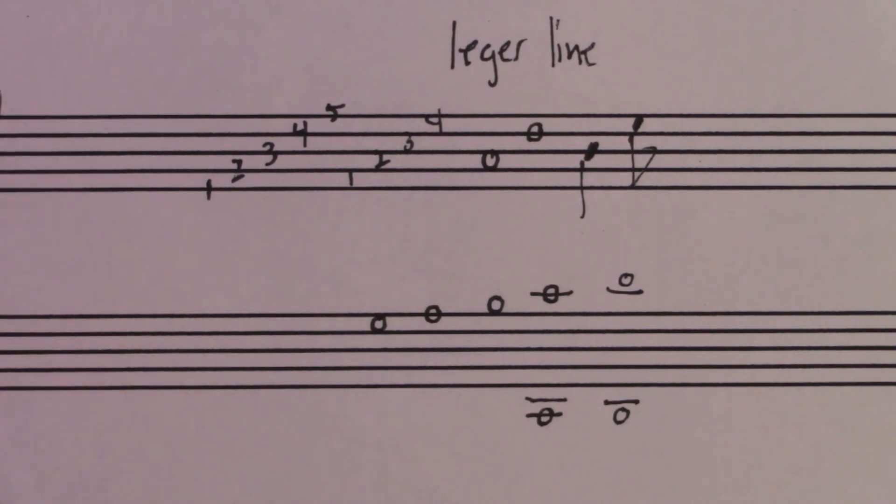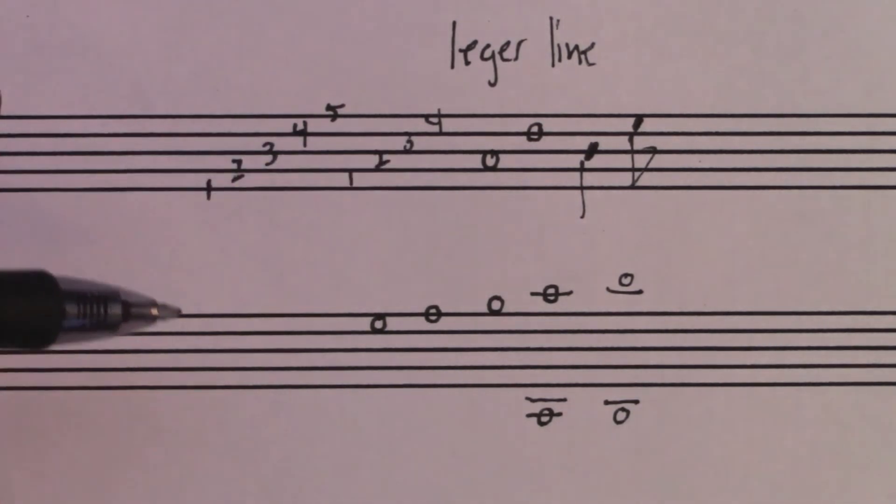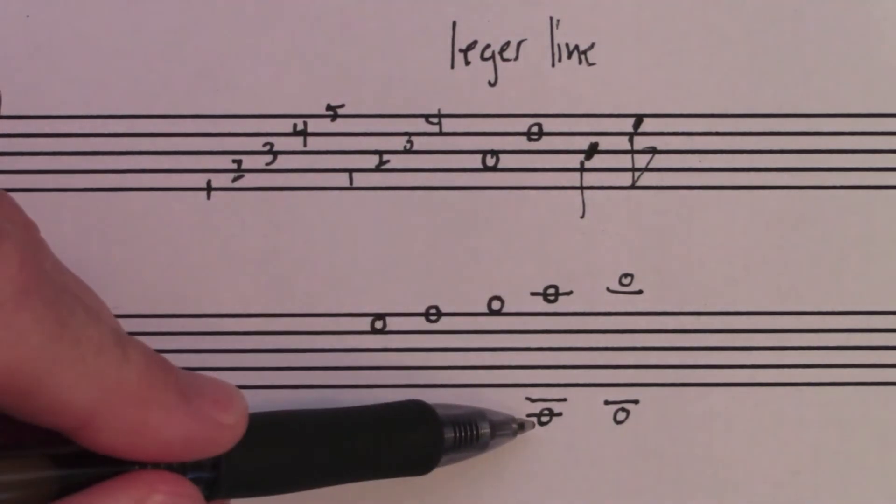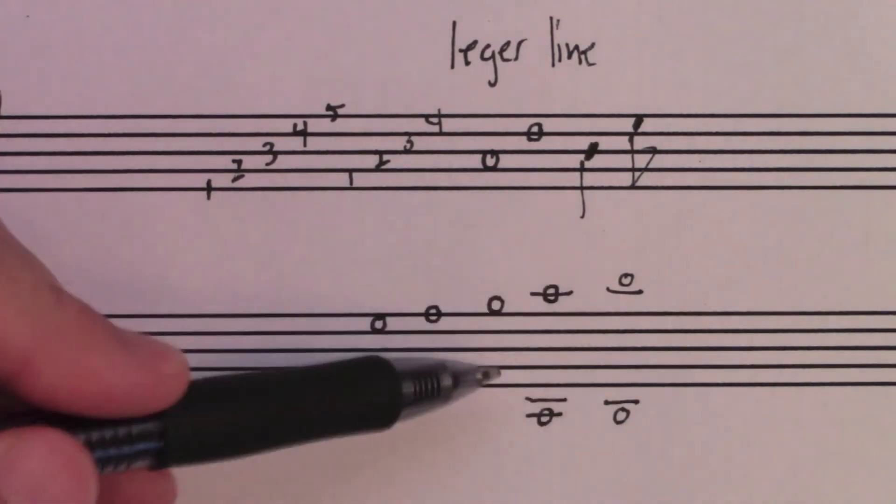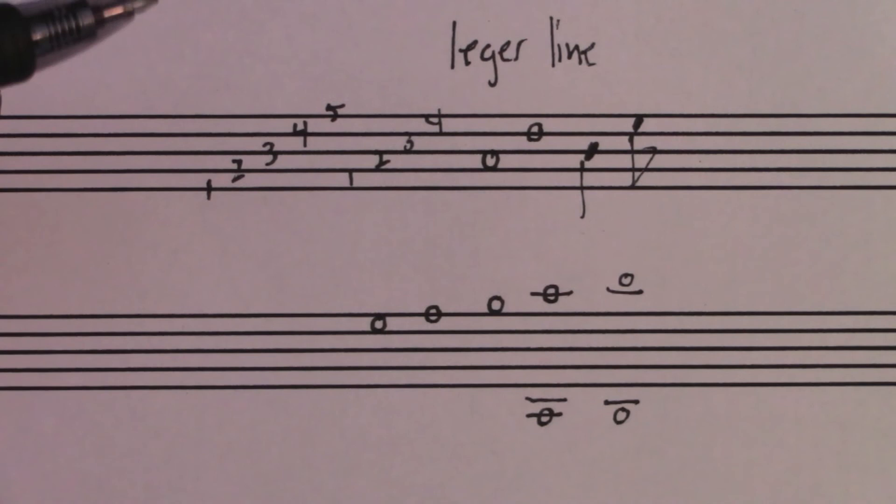And that's all there is to it as far as a staff. Five lines, four spaces, and a ledger line extends the staff even farther above or below. Alright? Have a great day!